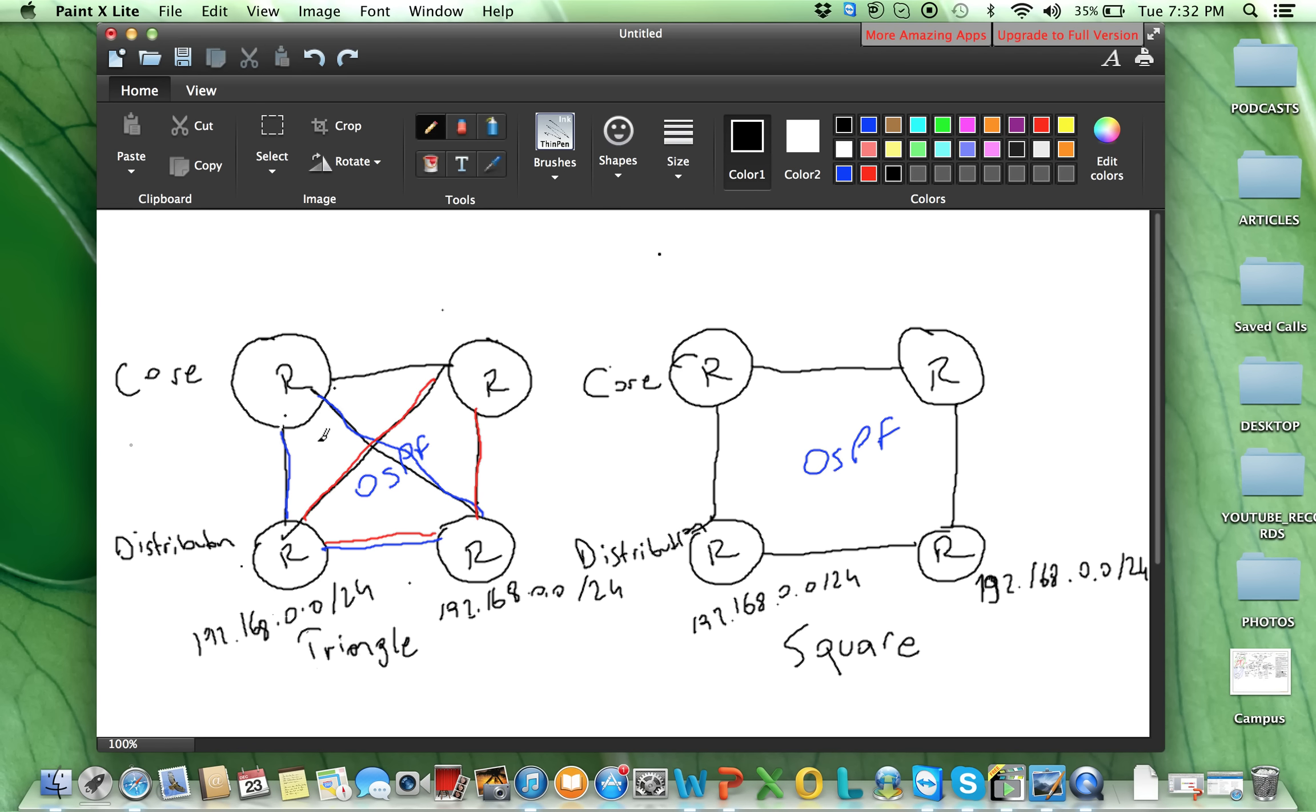Here, as you've seen, this router can reach 192.168.0.0/24 from this link and also from this link. And this is what we are calling ECMP, equal cost multipath. I explained in an earlier video